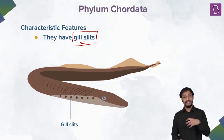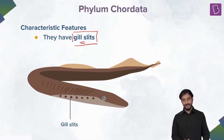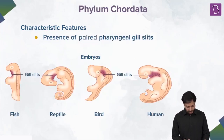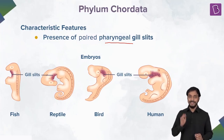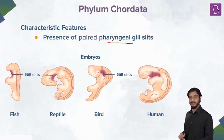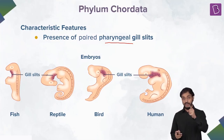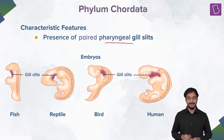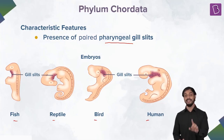At times gill slits are also used to filter food, because during the gas exchange process, food particles can be filtered out from water. Now here is an amazing concept: presence of pharyngeal gill slits. We human beings — we all had gill slits at one point in our life cycle. Fishes, reptiles, birds, and human beings all had gill slits.